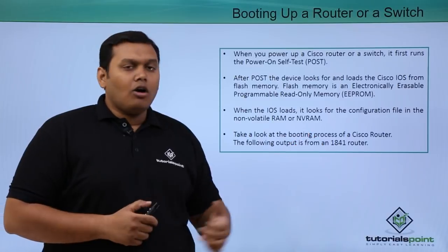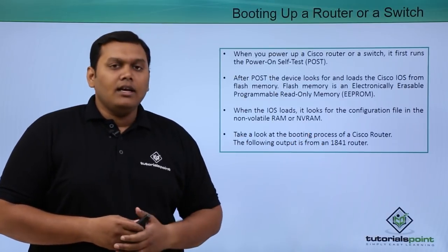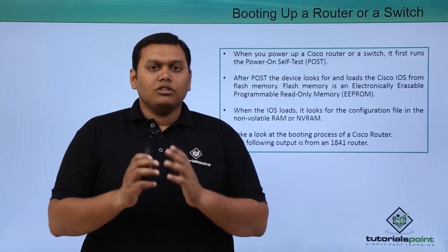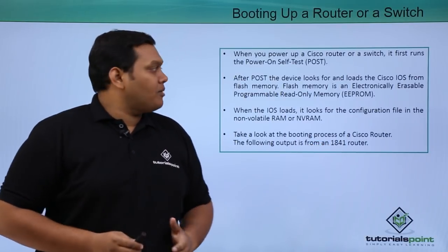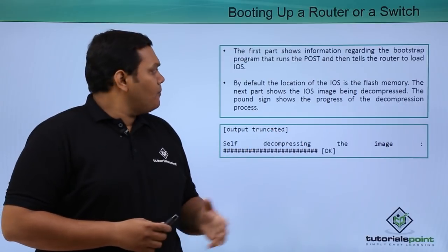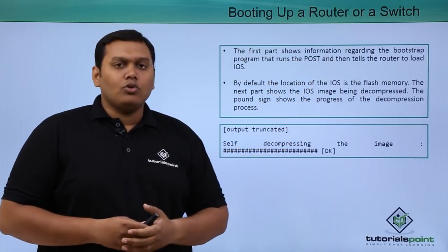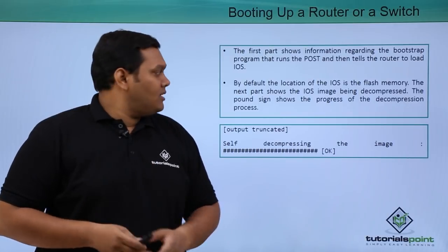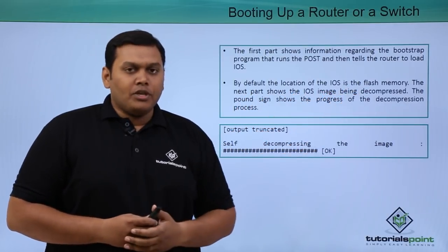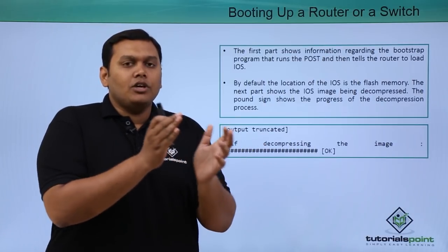We will now look at the booting process of a Cisco 1841 router. The first part shows information regarding the bootstrap process, which runs the POST and then tells the router to load the Cisco IOS. By default, the location of the IOS is flash memory, so from there the Cisco IOS loads.